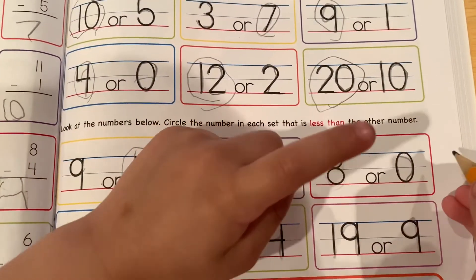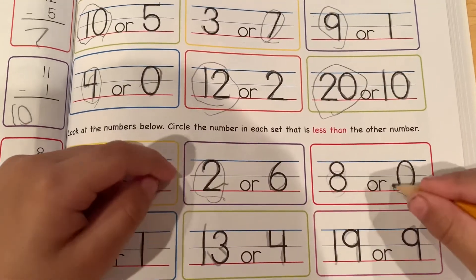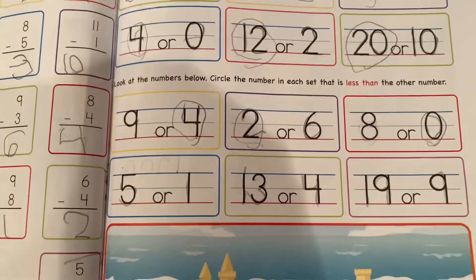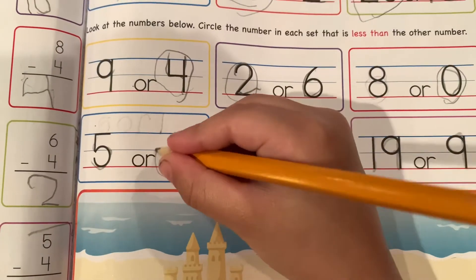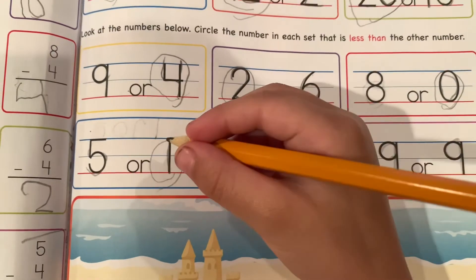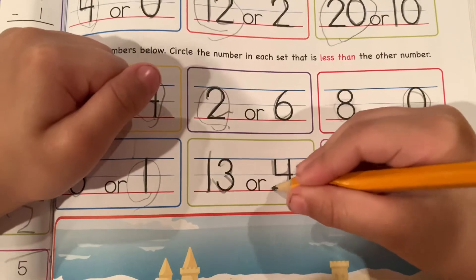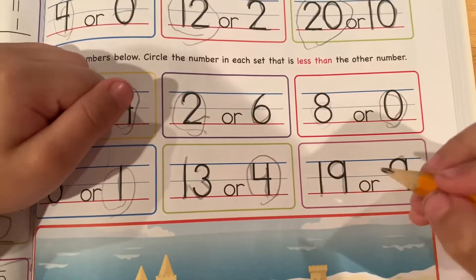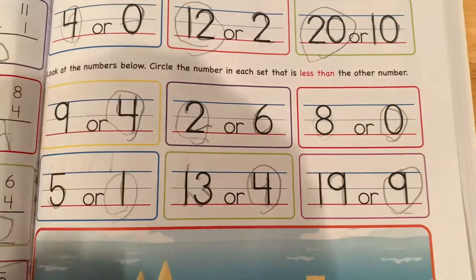Eight or zero? Which is less? Zero. Okay. Five or one? Which is less? One. Okay. Next. Thirteen or four? Which one is less? Four. Yes. Nineteen or nine? Which is less? Nine. Good job. Very good.